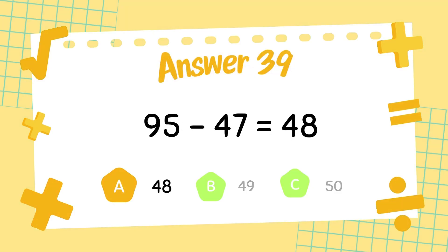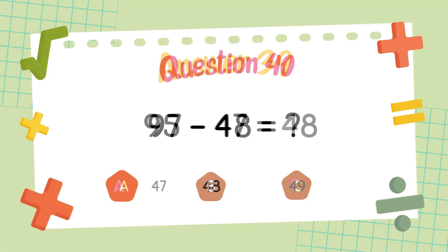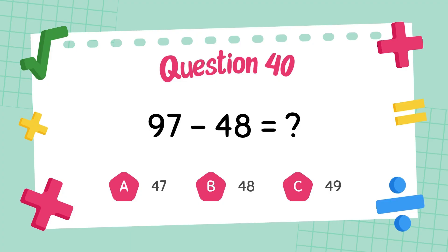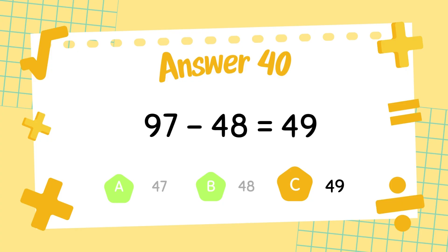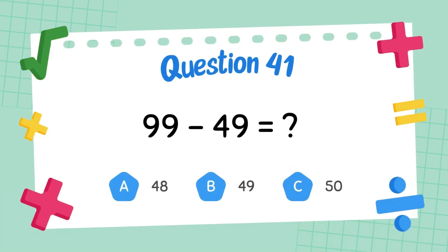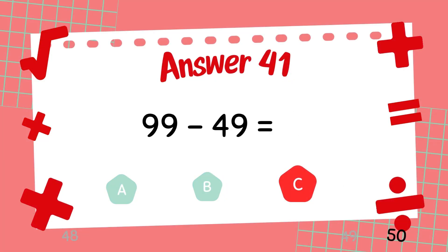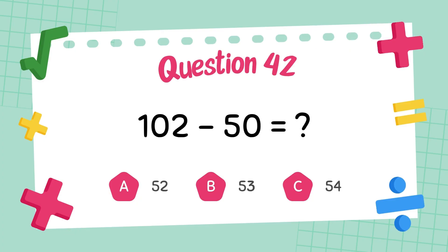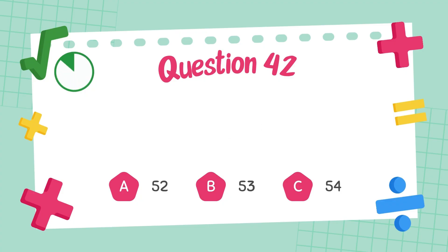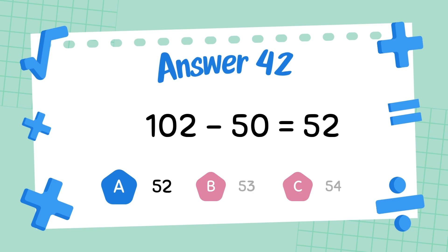The answer is 48. What is 97 minus 48? The answer is 49. What is 99 minus 49? The answer is 50. What is 102 minus 50? The answer is 52.